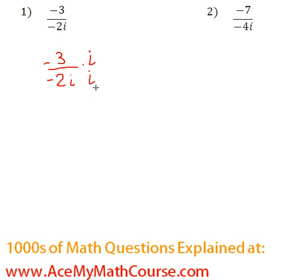Let's see what's going to happen here. We get negative 3i all over negative 2 times i squared. We know that i squared is negative 1, right? Since i is just the square root of negative 1.